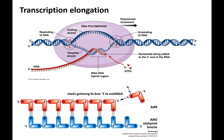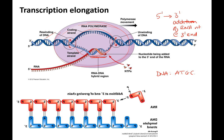Elongation is just the continuing addition of RNA nucleotides at the three prime end. RNA polymerase unwinds the DNA and also rewinds it. In this little transcription bubble, it is copying the base pairs of DNA to RNA base pairs. The only difference in your base pairing rules is that DNA is ATGC, while RNA is UACG — there is no thymine in RNA.